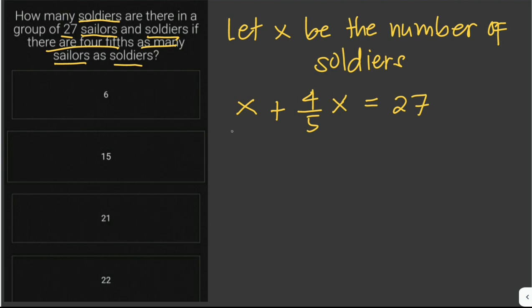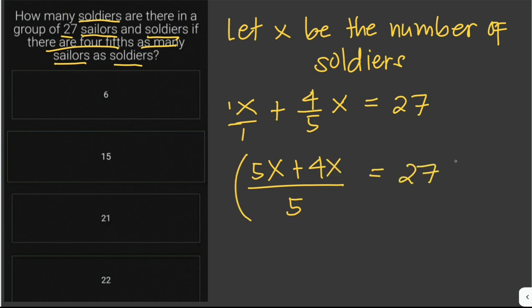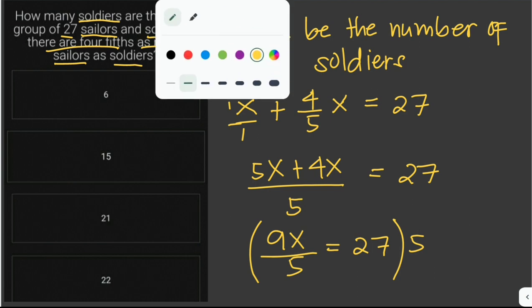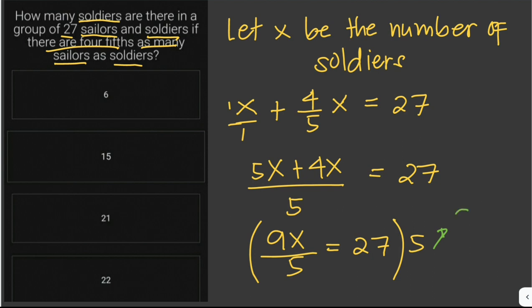So x plus four-fifths x — we get the LCD, which is 5. Five divided by 1 is 5, so 5 times 1 is 5x; five divided by 5 is 1, times four is 4x. That gives us 9x over 5 equals 27. We then multiply both sides by 5, giving us 9x equals 27 times 5, which equals 135.